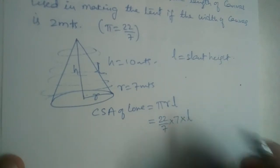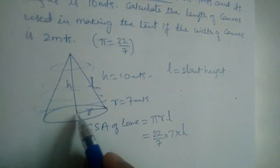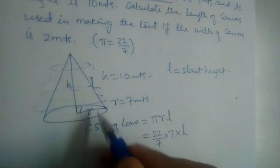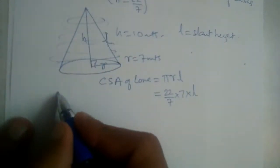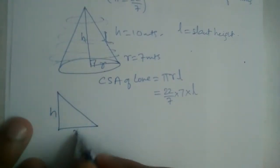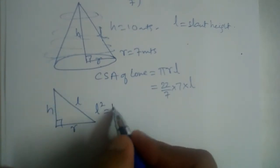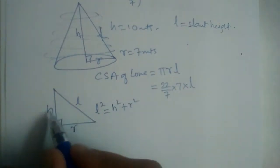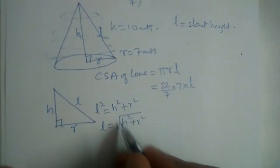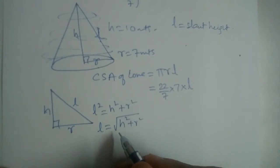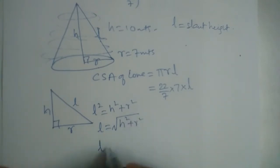We don't know L yet. If you observe carefully, H, R, and L form a right angle triangle. So L squared, the hypotenuse squared, is equal to H squared plus R squared — using the Pythagoras theorem. Therefore L equals the square root of H squared plus R squared.